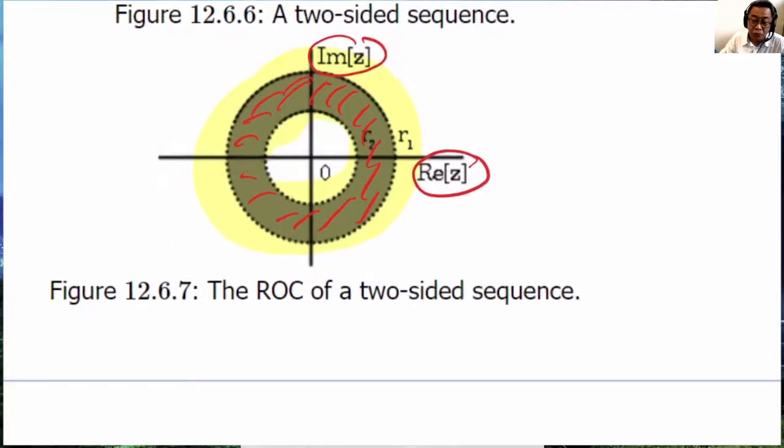We can rule out finite duration sequence because finite duration sequence is the entire Z plane, which is not a causal sequence because causal sequence extends outwards. It is not the anti-causal sequence because anti-causal sequence have ROC that extends inward.